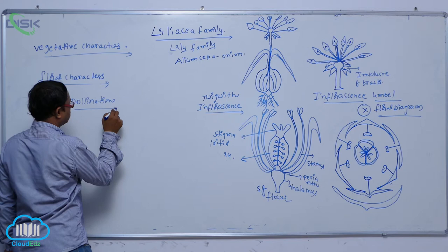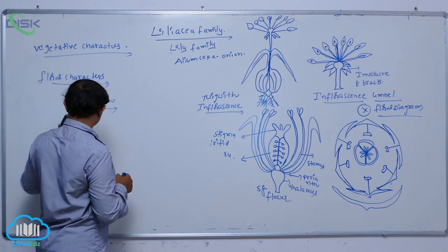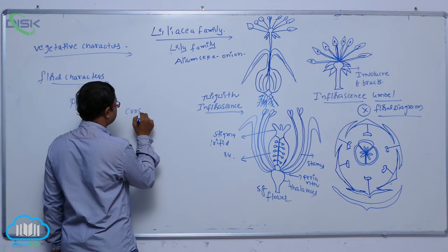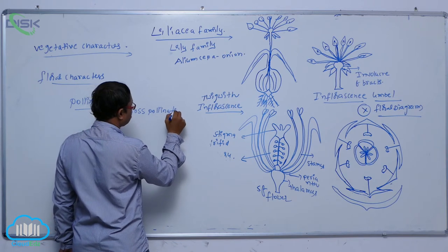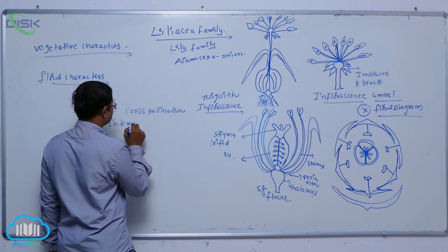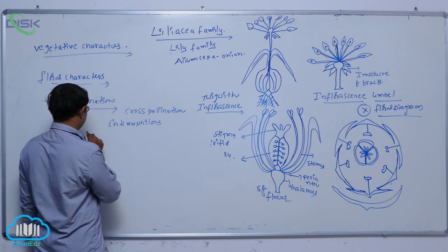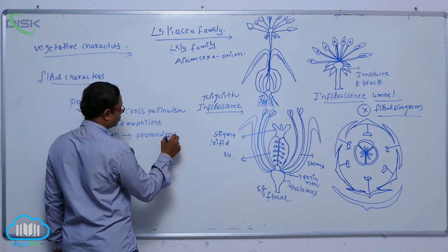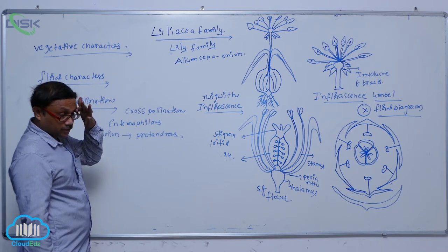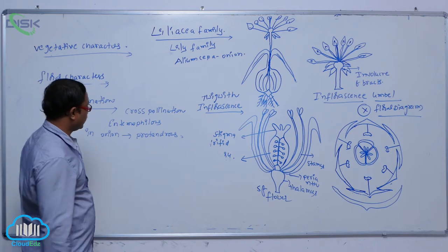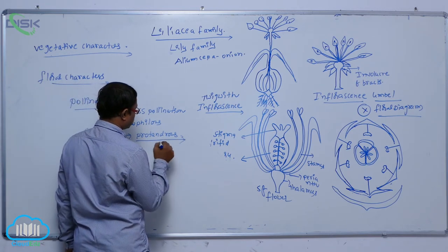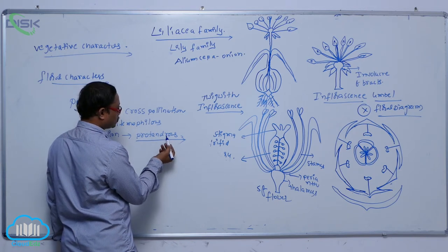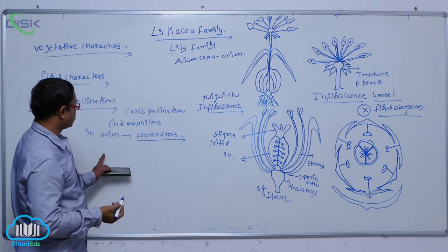That is known as cross pollination. Generally flowers are attracted to insects — that's why it is known as entomophilous cross pollination. In onion, it is known as protandrous. Protandrous means in a bisexual flower, the androecium comes to the mature condition earlier than the gynoecium — that is known as protandrous.